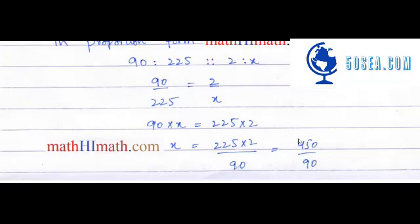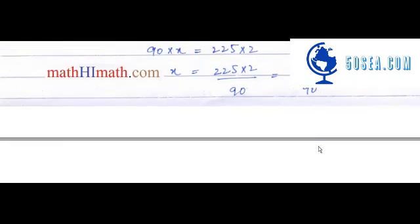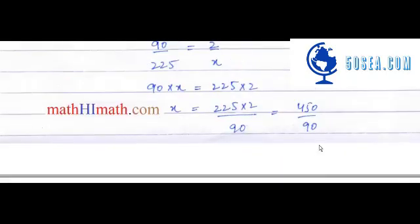Now this becomes 450 divided by 90. The zeros cancel out, and 45 divided by 9 equals 5 liters. So 5 liters of fuel is required to cover a distance of 225 kilometers.